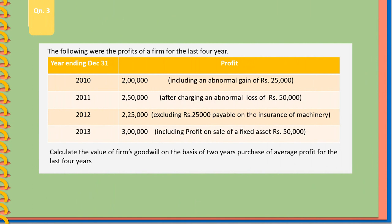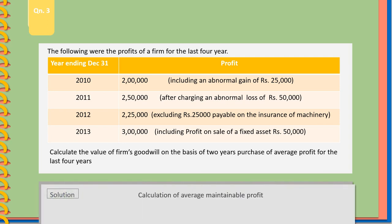Question 3: The following were the profits of a firm for the last 4 years. The 2013 profit of Rs. 3 lakh includes profit on sale of a fixed asset of Rs. 50,000. Calculate the value of the firm's goodwill on the basis of 2 years purchase of average profit for the last 4 years. In this problem, we will adjust the abnormal gain from the fixed asset and insurance of machines.